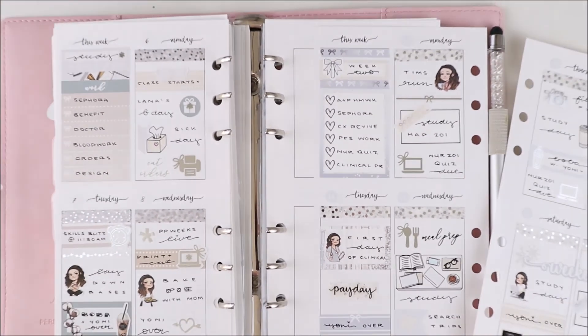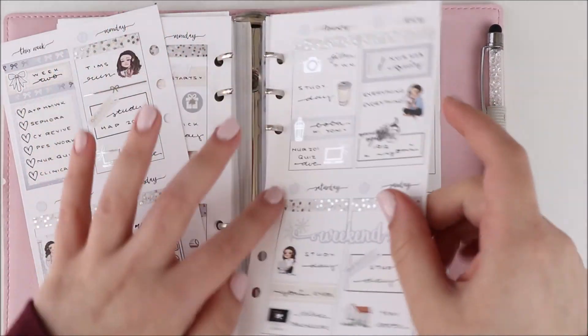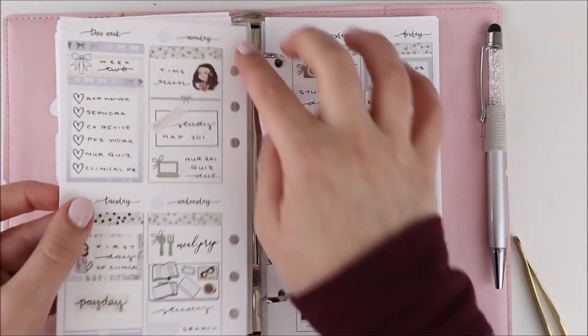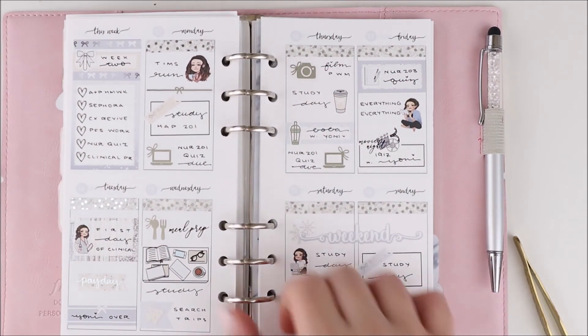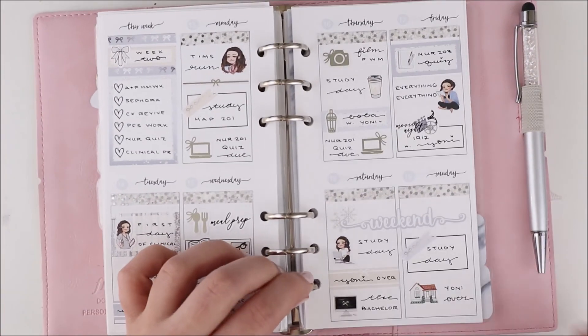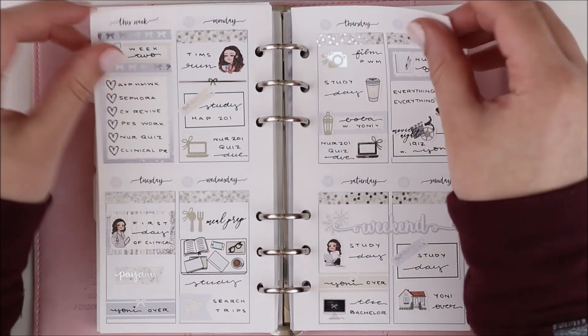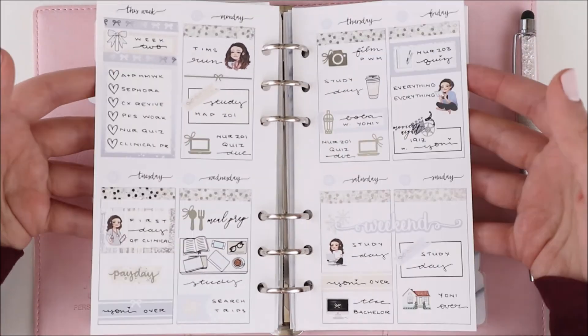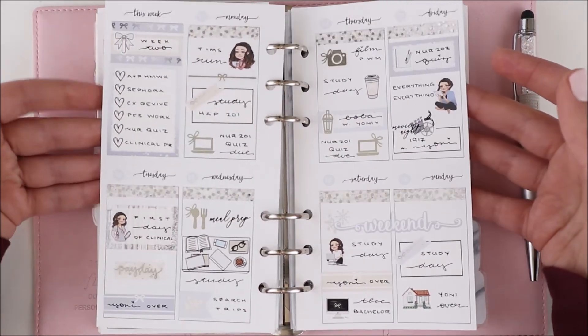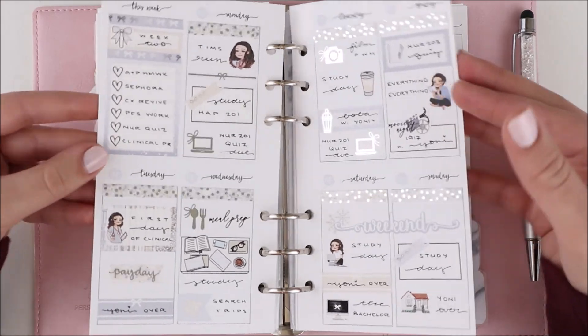Sunday was another study day so I used another one of those bow washi half boxes to mark that. Then Yanni came over at night so I used the house icon from the kit for that. I hope you guys like this plan with me, let me know what you think in the comments down below and I'll see you guys next time, bye!